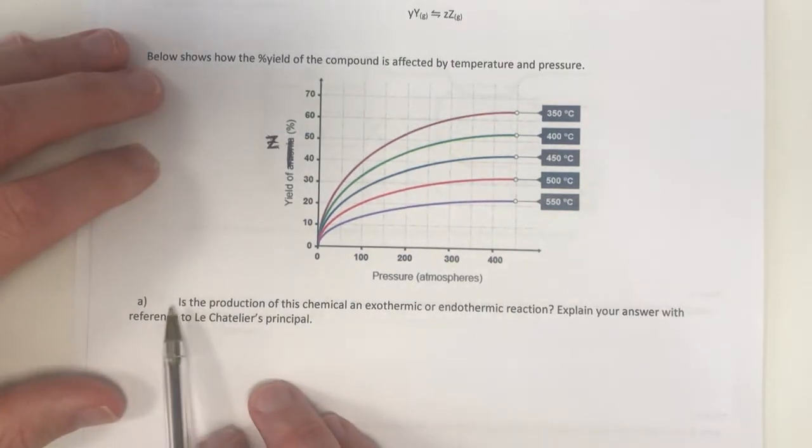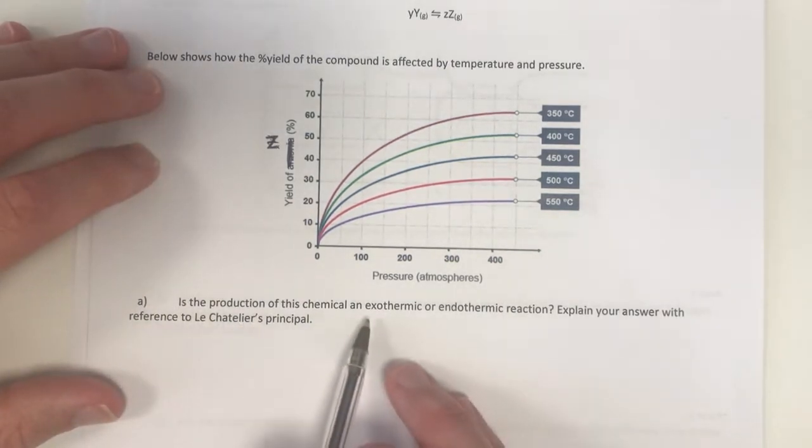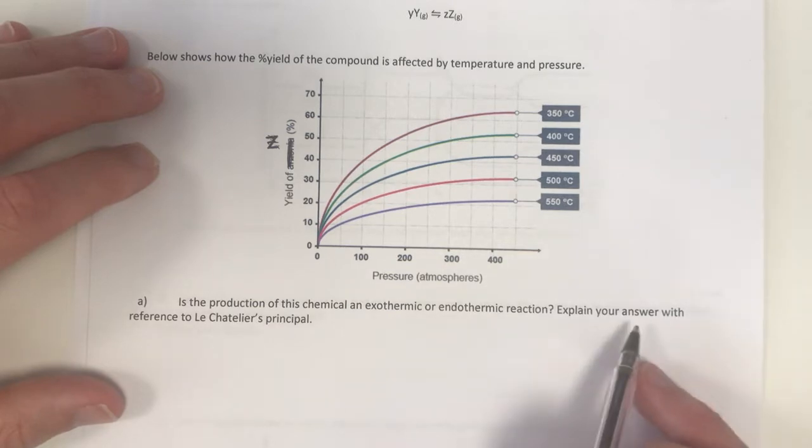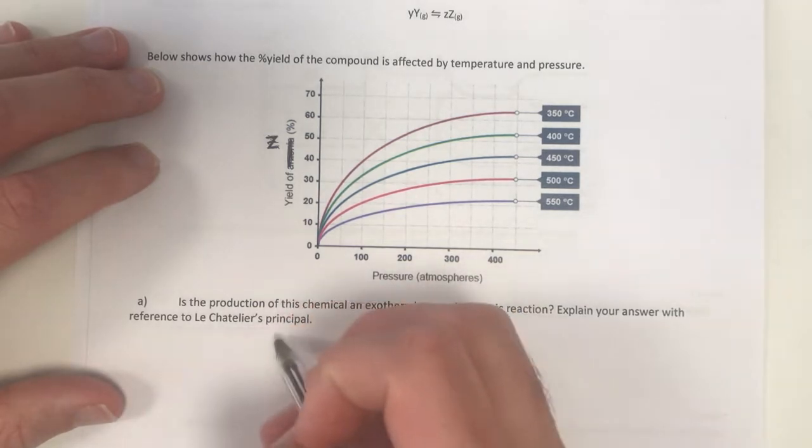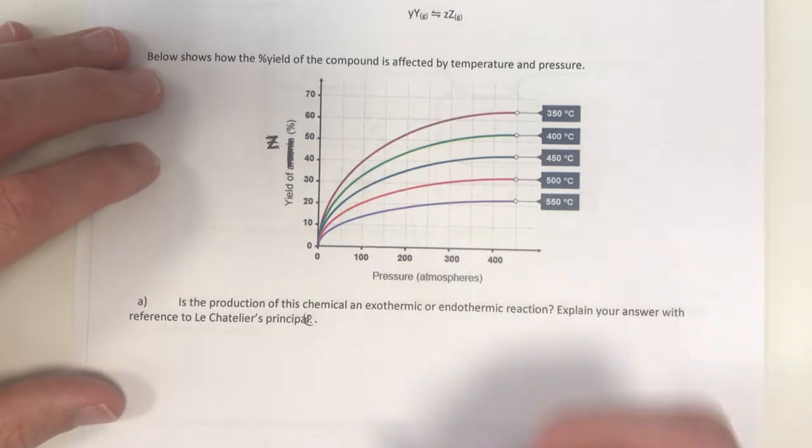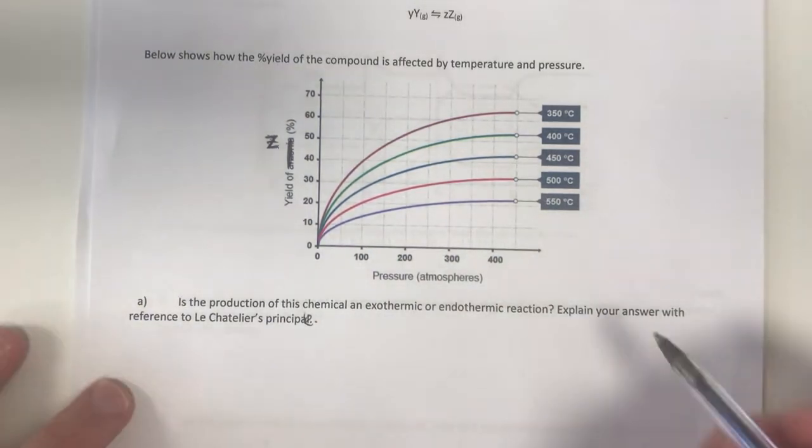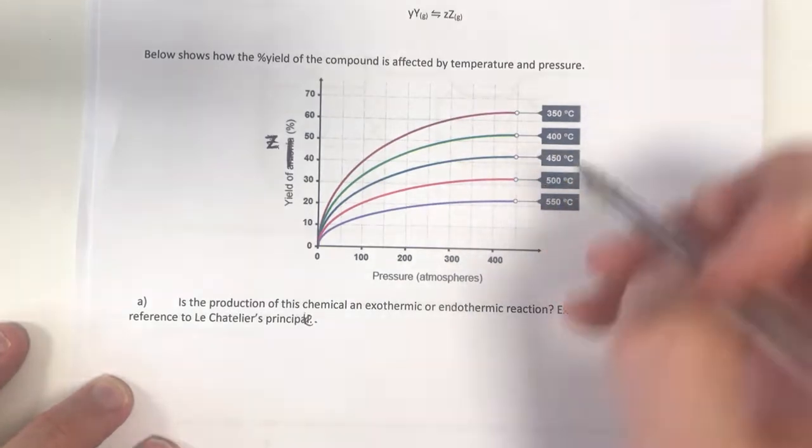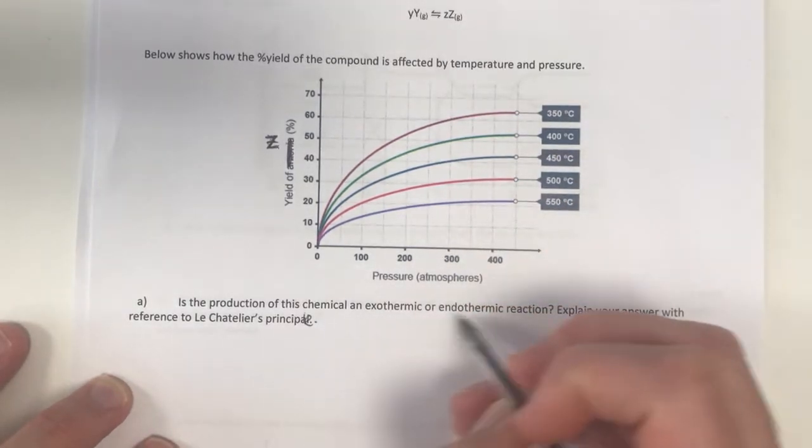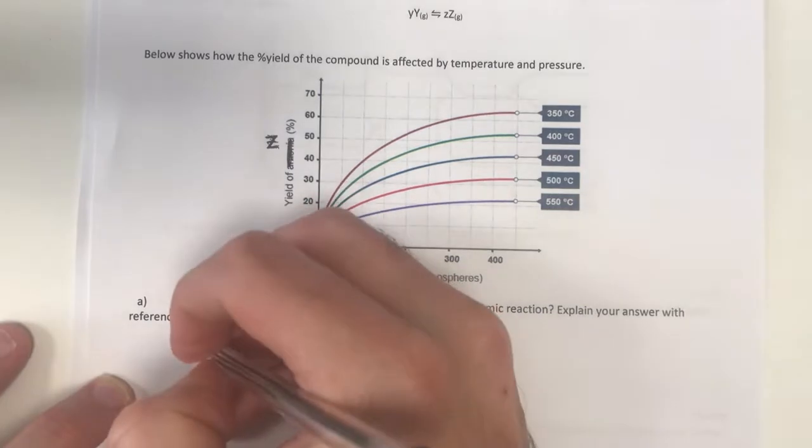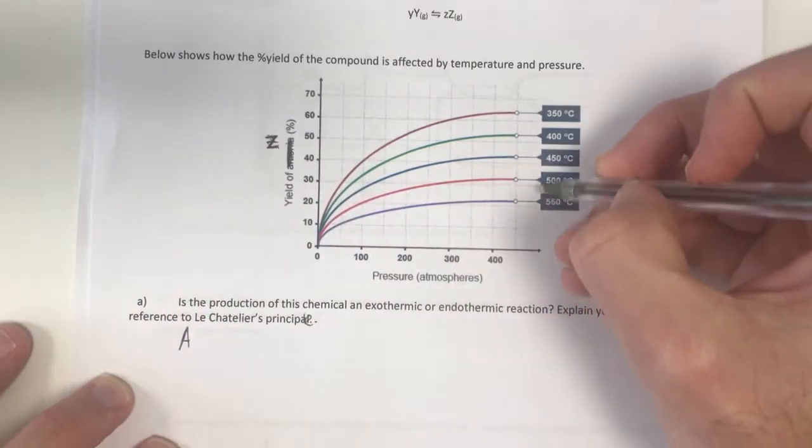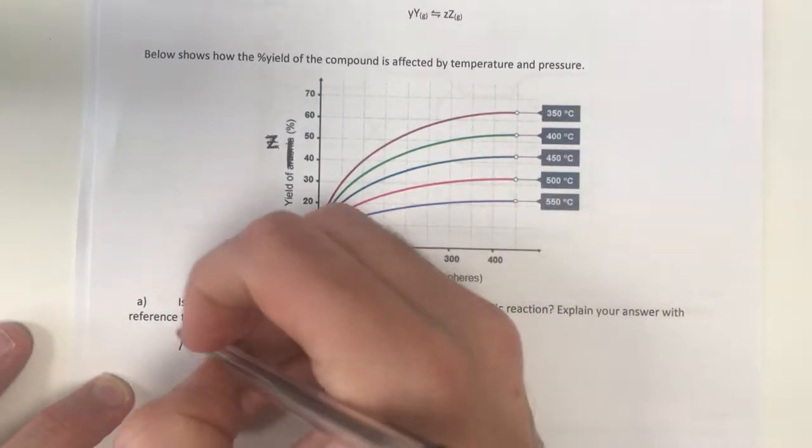Question number A. Is the production of this chemical an exothermic or endothermic reaction? Explain your answer with reference to Le Chatelier's principle. So what do we know? We need to identify what we have in the graph. Endo and exothermic reactions, in terms of Le Chatelier's principle, it's all about temperature.